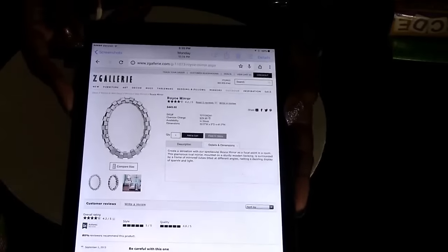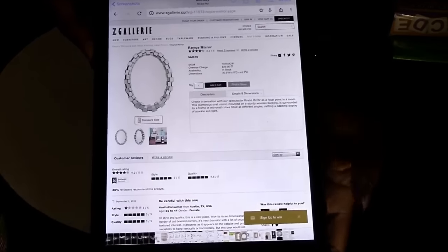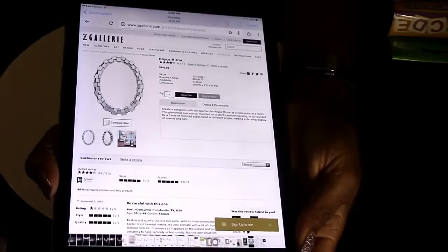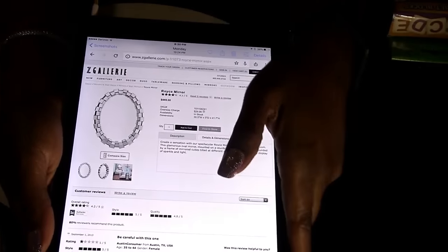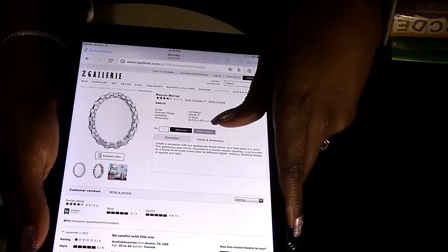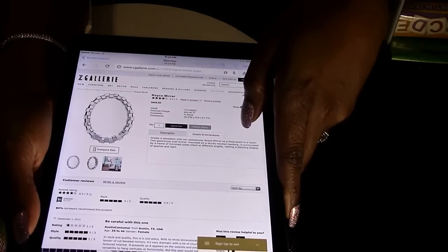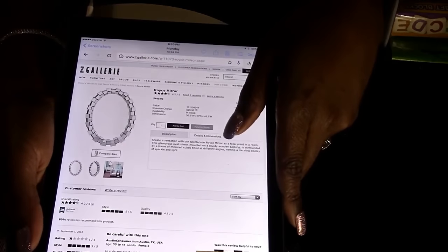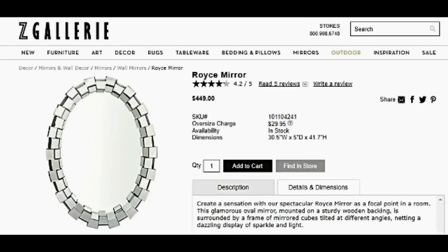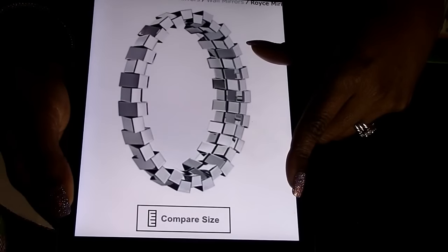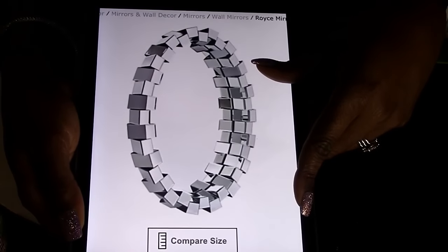Okay fam, before I give you the supplies I wanted to show you what I was going to make. I'm going to post a picture as well. I am going to do the Royce mirror. It retails for $449 on Z Gallery and I wanted to show you guys a couple of pictures of it and let you guys see in slow motion what it looks like up close.